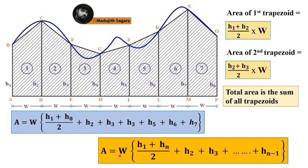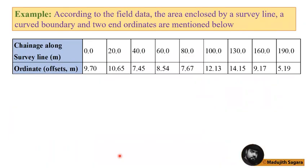We will directly go to a calculation, an example calculation. This is the example calculation. I will read it. According to the field data, the area enclosed by a survey line, a curved boundary, and two end ordinates are mentioned below. Ordinates are the offsets. Don't get panic due to this word. Here you can see these are the chainage: 0, 20, 40, 60, 80, 100, 130, 160, and 190.